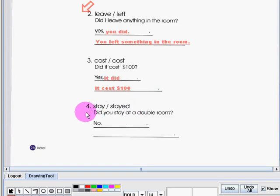Now let us answer the last question. We need to use the verb stay or stayed. Here's the question: Did you stay at a double room? And the response starts with a no. What is the correct response? The correct answer is no, I didn't. I didn't stay at a double room.